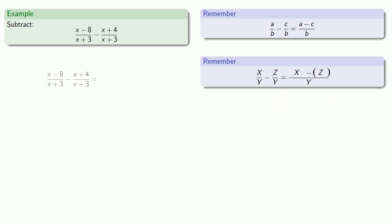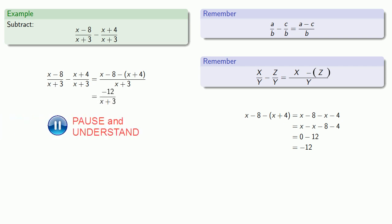So our denominators are the same, so we can subtract the numerators, x minus 8, minus x plus 4, making sure that everything's in parentheses. Now let's try and simplify that numerator, x minus 8, minus quantity x minus 4, that minus distributes, so we get x minus 8, minus x minus 4. We'll rearrange things a little bit and simplify. Getting a final value of minus 12 as our numerator, and our denominator stays the same.